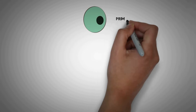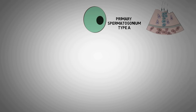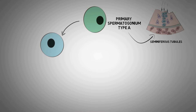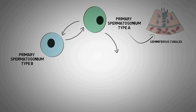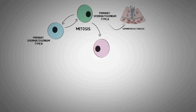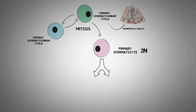Now let's talk about the series of cell divisions that occur in the first phase of spermatogenesis. We start with the primary germ cells known as primary spermatogonium type A, which are found in the wall of the seminiferous tubules. The main job of primary spermatogonium type A is to divide into two types of cells. The first is type B primary spermatogonium, which auto-reproduces and maintains the number of primary spermatogonium type A. The first division in the series is a mitosis, which gives rise to an intermediate stage known as the primary spermatocyte — a diploid cell maintaining the number of chromosomes.